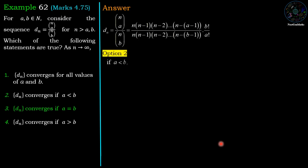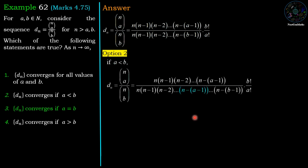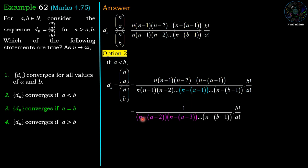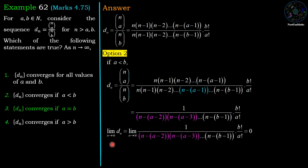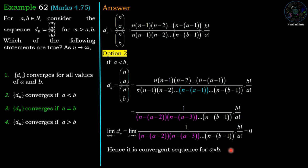Now we discuss option two where a is less than b. If a is less than b, then between n and n−b−1 we have the term n−a−1. Common terms from numerator and denominator cancel, leaving 1 over (n−a−2)(n−a−3)···(n−b−1), times b factorial divided by a factorial. Taking the limit as n approaches infinity, the denominator approaches infinity, so b factorial divided by infinity equals 0. Therefore dn is convergent for a less than b, and option two is correct.